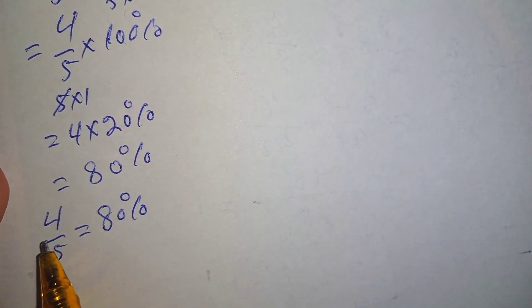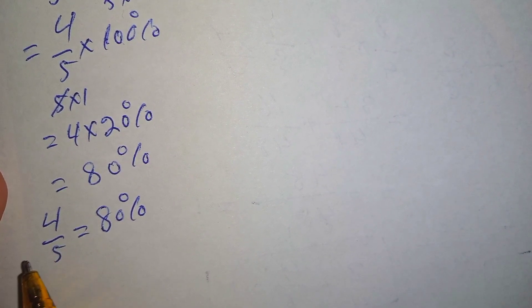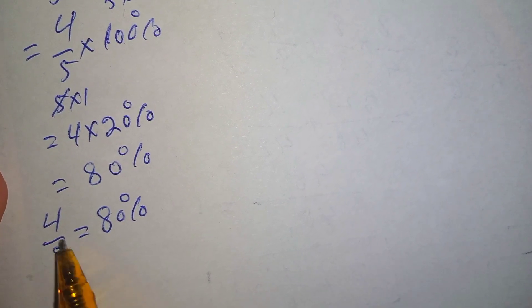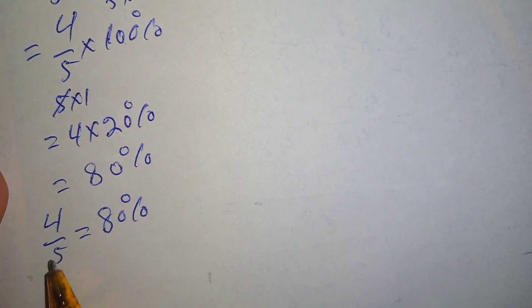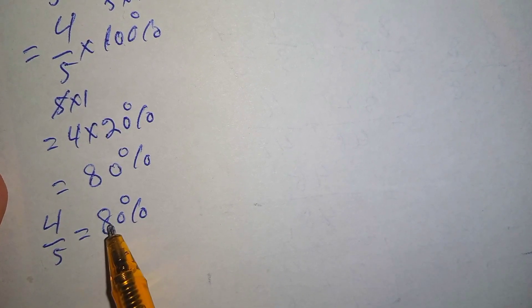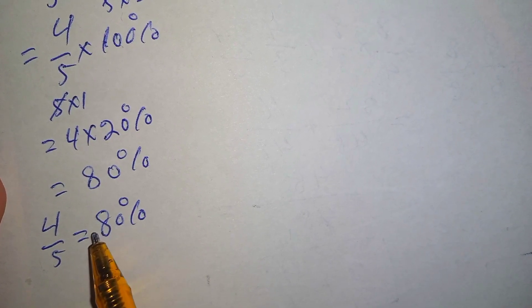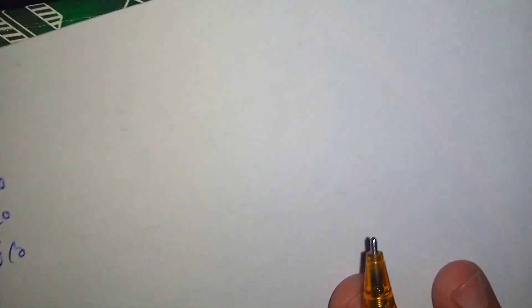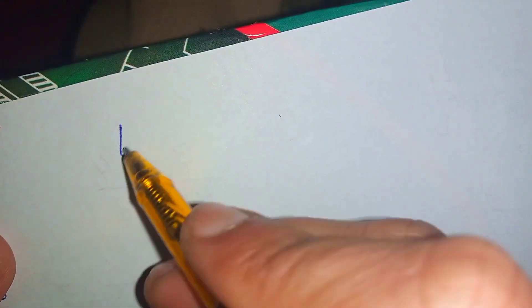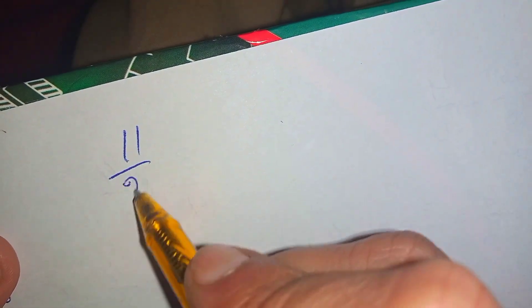So we conclude that 4 over 5 is equal to 80 percent. In this way we can easily convert the proper fraction 4 over 5 into a percentage, which is 80 percent. Now we can look at another number, which is 11 over 22.